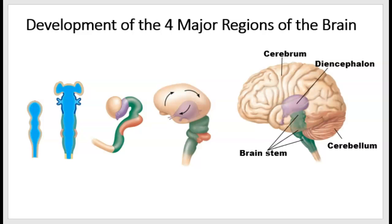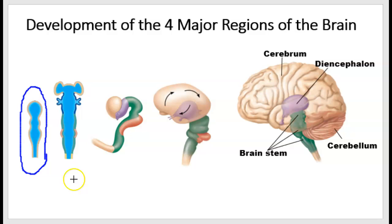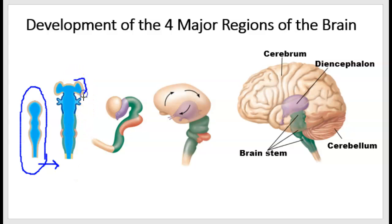The average adult brain weighs about three pounds and is the size of two of your fists. It forms from a hollow tube called the neural tube, which develops by embryonic week four — I've circled it on the left. As the brain develops, it continues to elongate and thicken, and it folds and forms some outpocketings or swellings. You can see some swellings here on the outside of the neural tube.